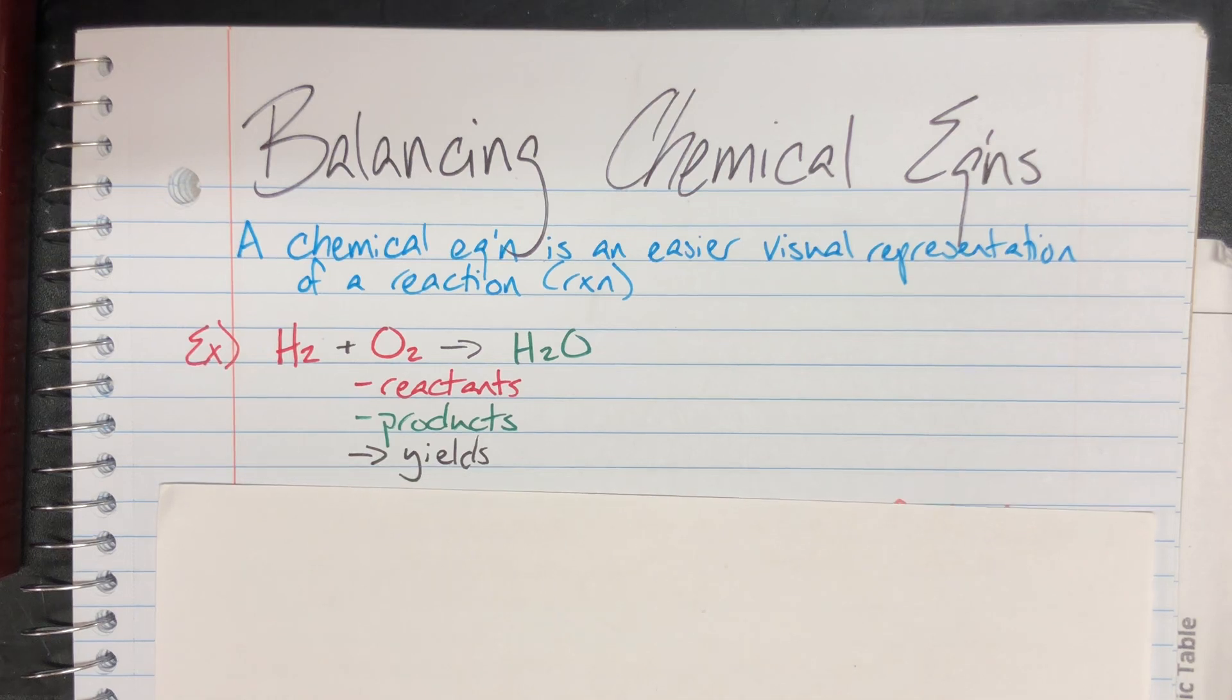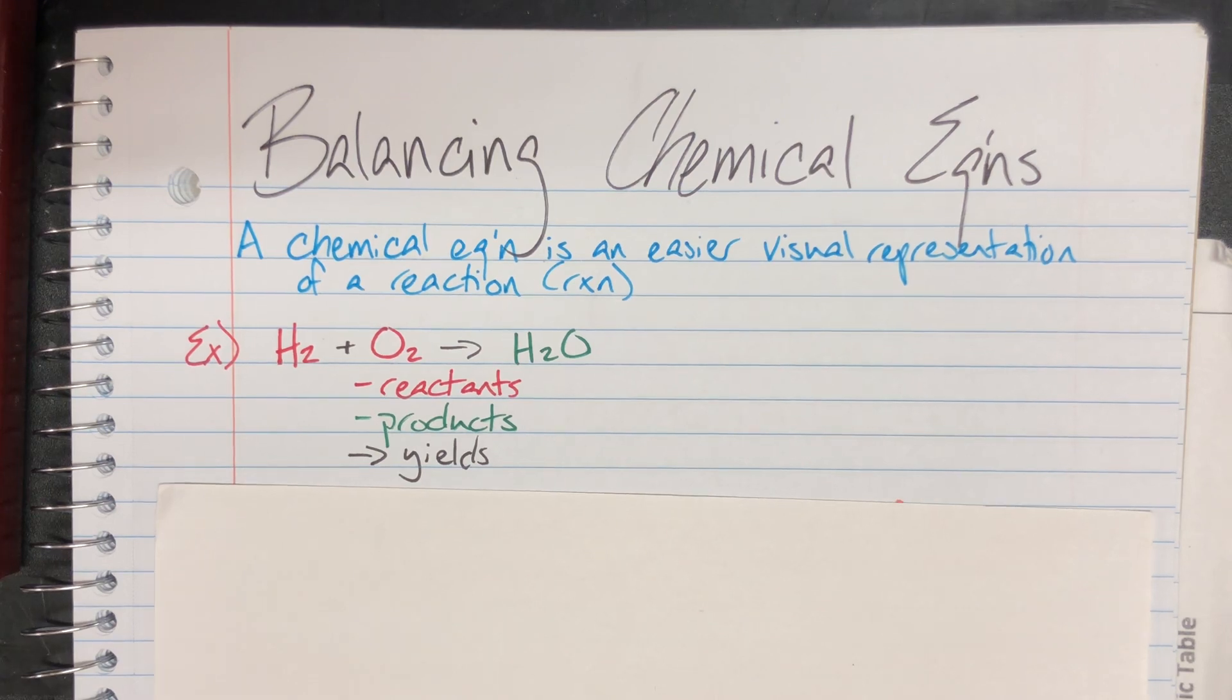The arrow is generally read aloud as yields or goes to. It's my visual representation of here's everything that got mixed together, a reaction has happened, and then afterward I will have my product, what I produced from that reaction.